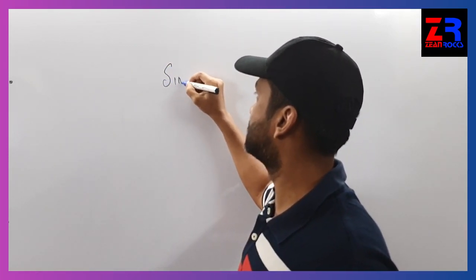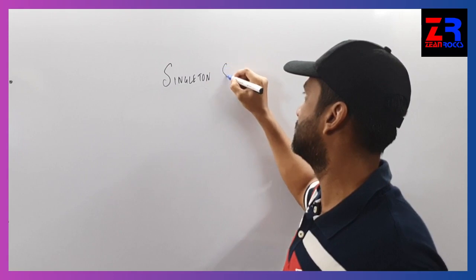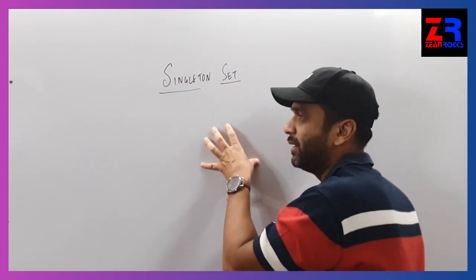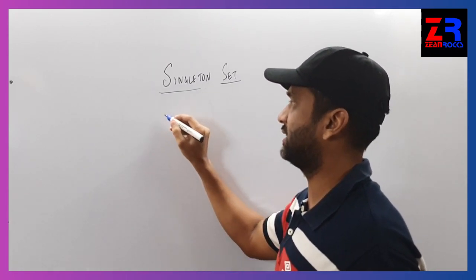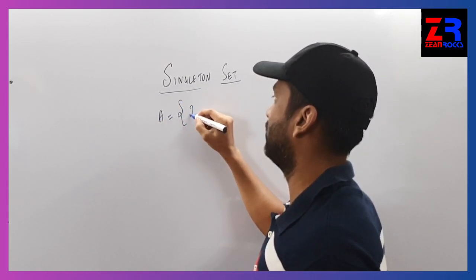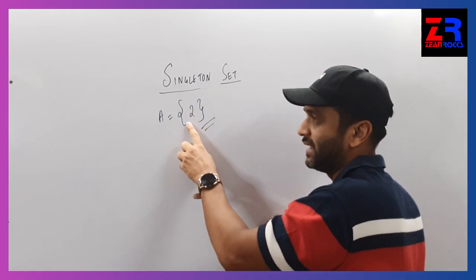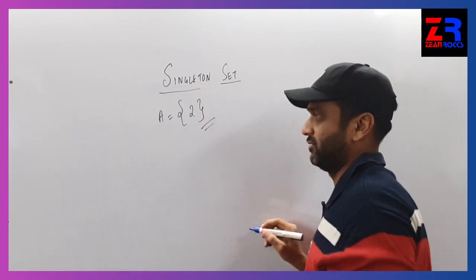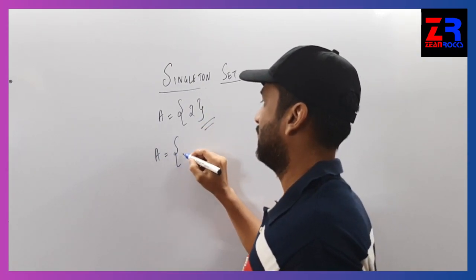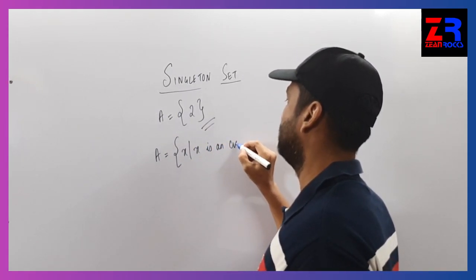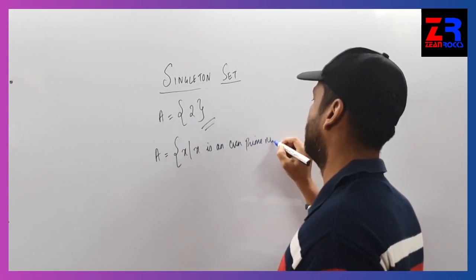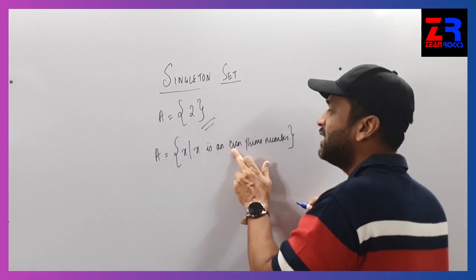The first important concept is called a singleton set. A set in which there is only one element is called a singleton set. For example, this is set A and in that I will write 2. This is a single element in the set, so it is called a singleton set. For example, A is equal to X such that X is an even prime number. Which is an even prime number?